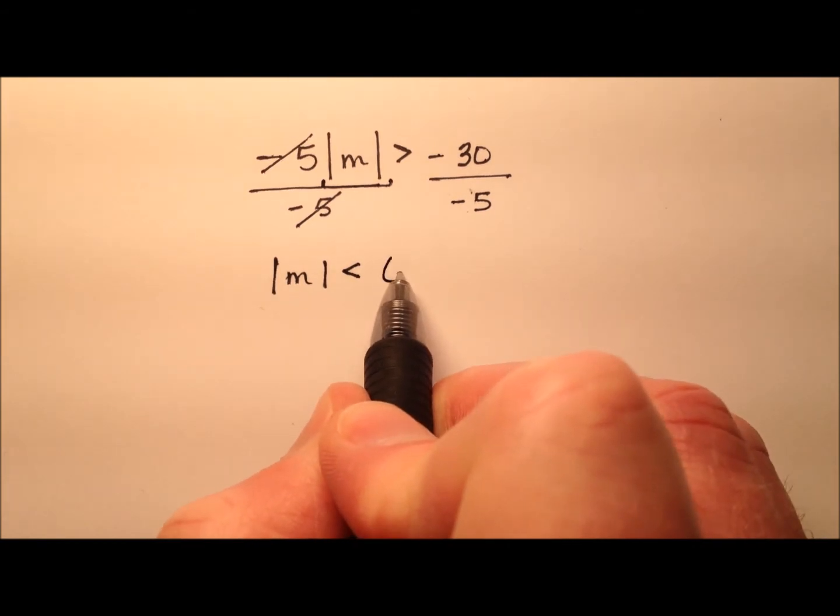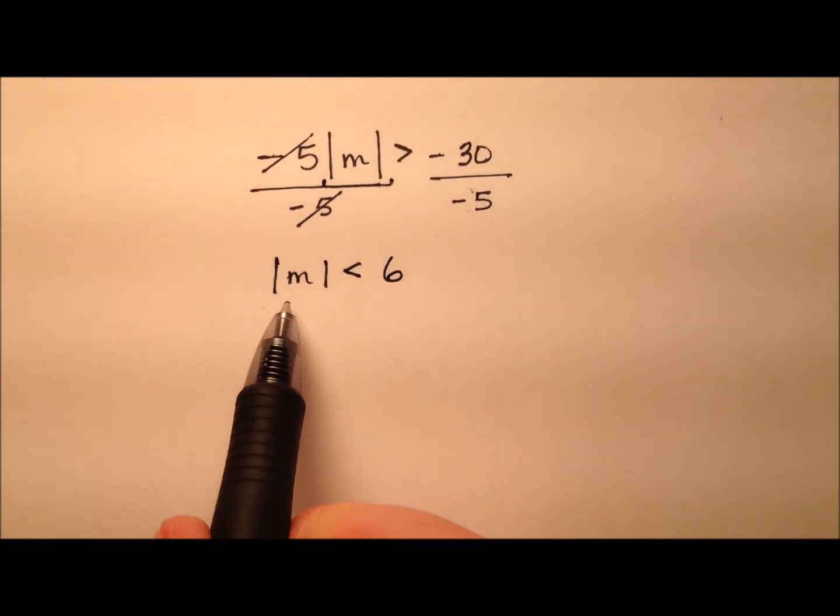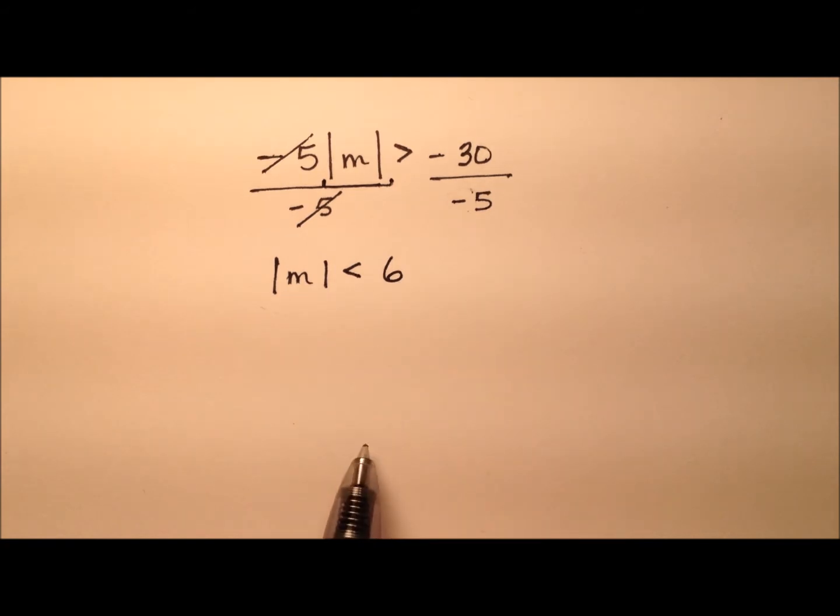Now, negative 30 divided by negative 5 is 6. So now I have the absolute value of m is less than 6.